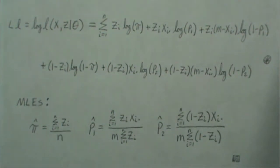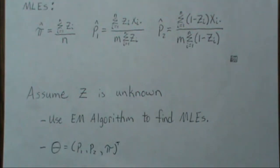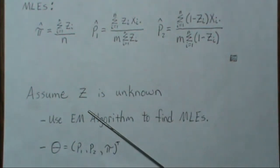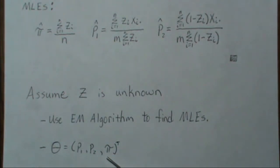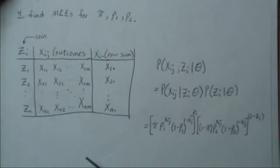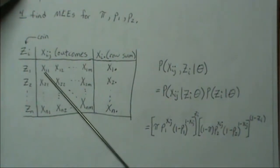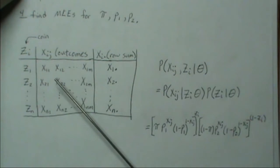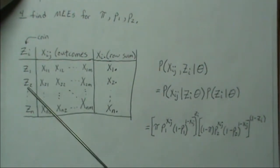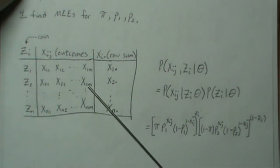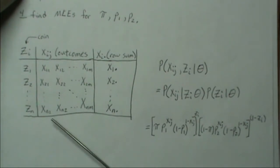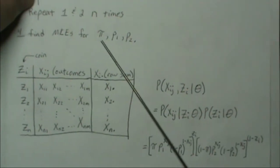Now we reformulate the problem: we let Z be unknown and use the EM algorithm to find the MLEs for P1, P2, and pi. This means when we randomly pick a coin, we don't know which coin is being picked, but we do observe the outcomes. We re-pick another coin, again not knowing if it's coin 1 or 2, but we observe the outcomes, and then we find the MLEs.